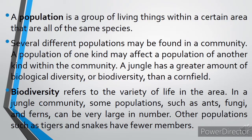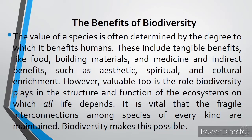A population is a group of living things within a certain area that are all of the same species. Several different populations may be found in a community, and a population of one kind may affect a population of another kind within the community. A jungle has a greater amount of biological diversity or biodiversity than a cornfield. In a jungle community, some populations such as ants, fungi, and ferns can be very large in number, while other populations such as tigers and snakes have fewer members.